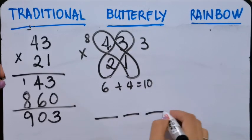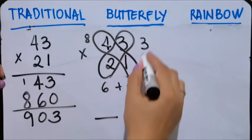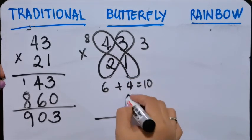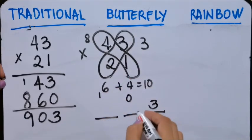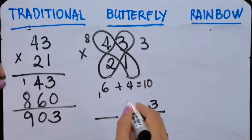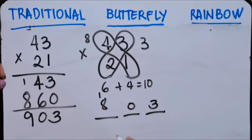And then 6 plus 4 is 10. So 3, 0, carry 1. So 0, carry 1, and then 8. So we'll have 903.